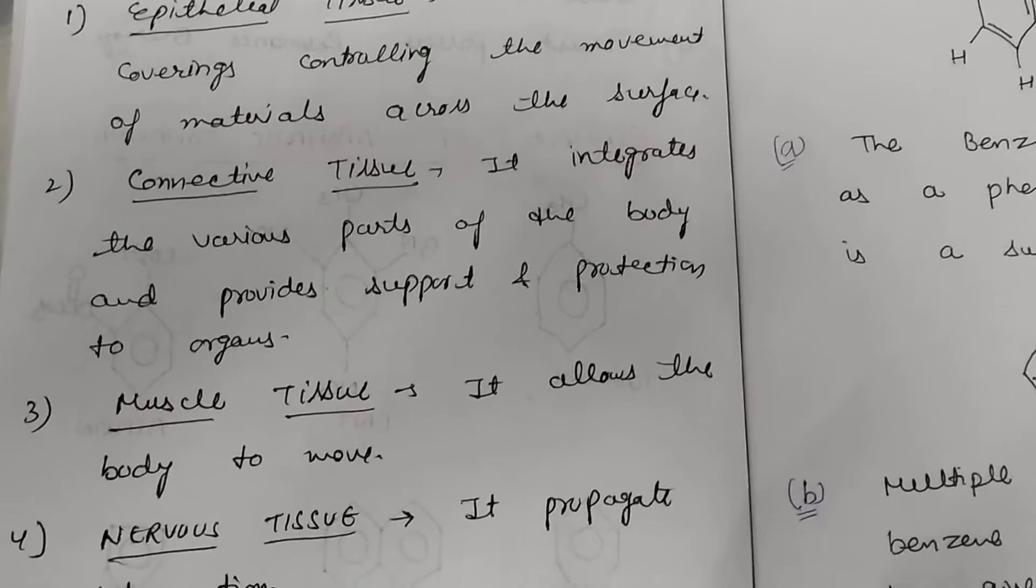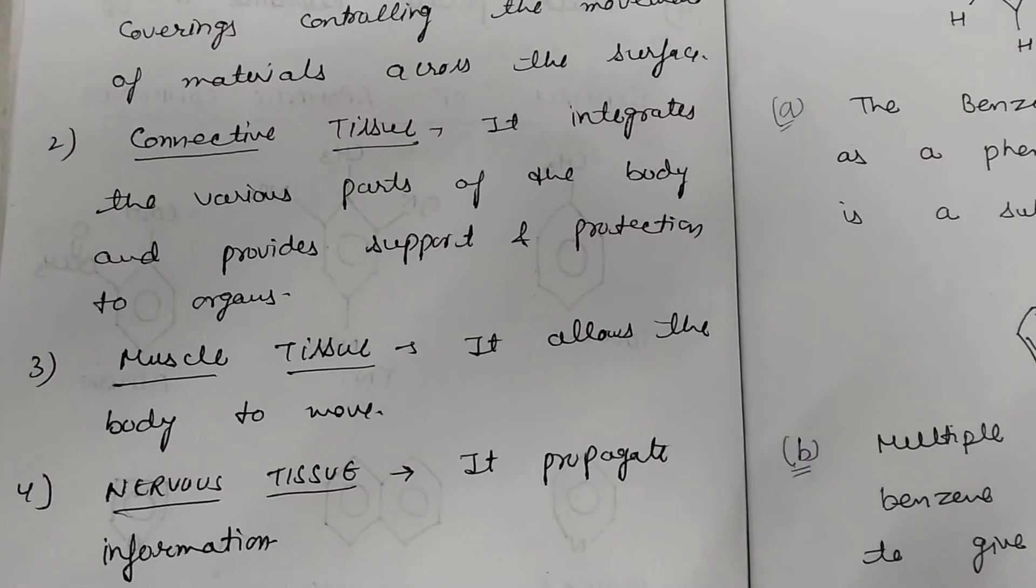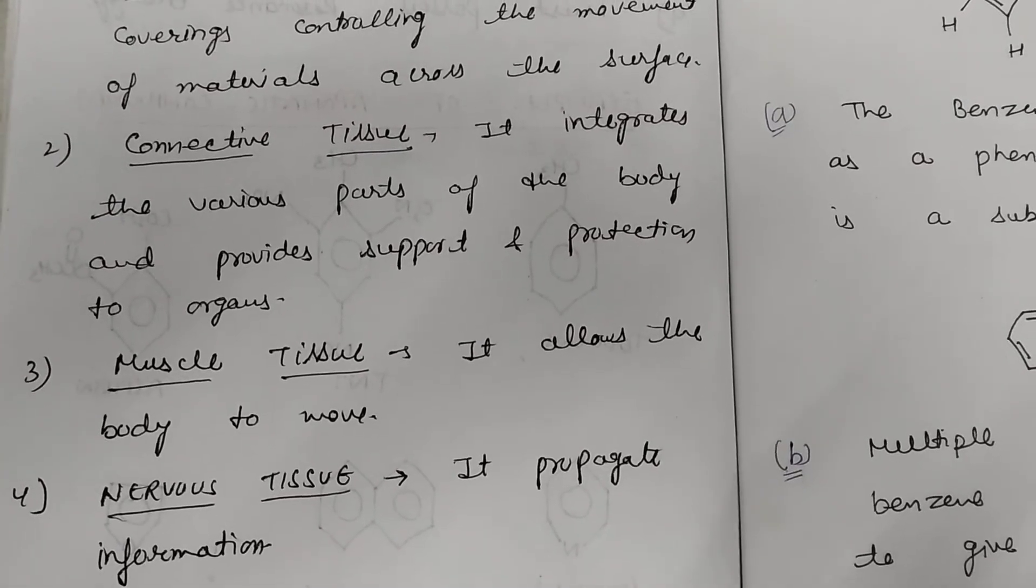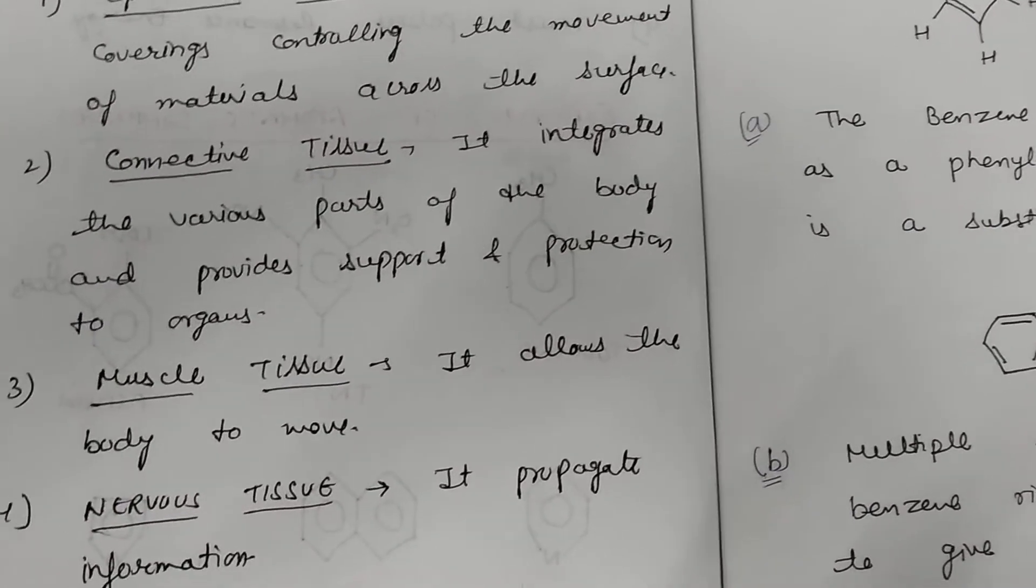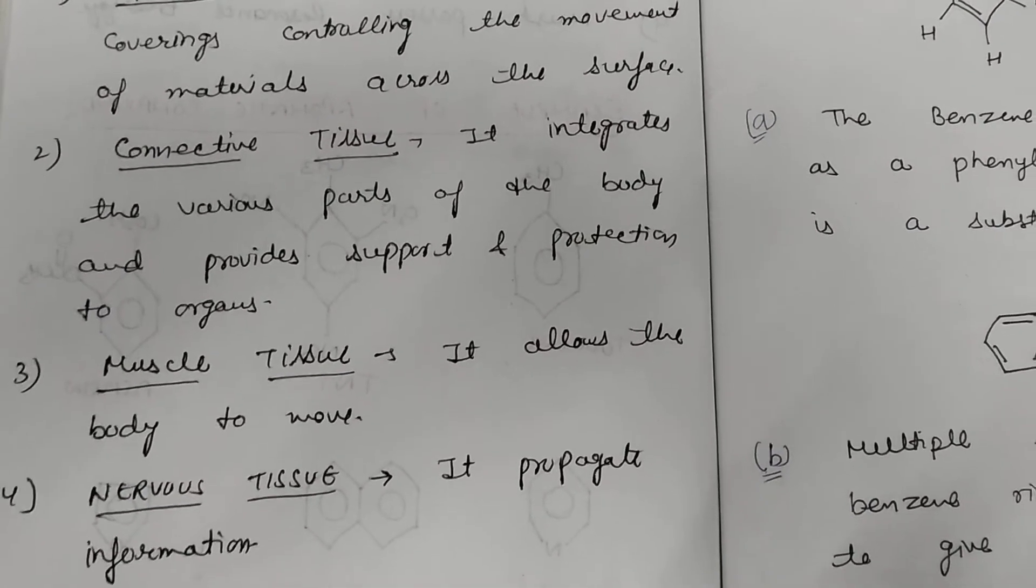Second, connective tissue. Connective tissue integrates various parts of the body and provides support and protection to organs. It helps our body provide protection to our organs.